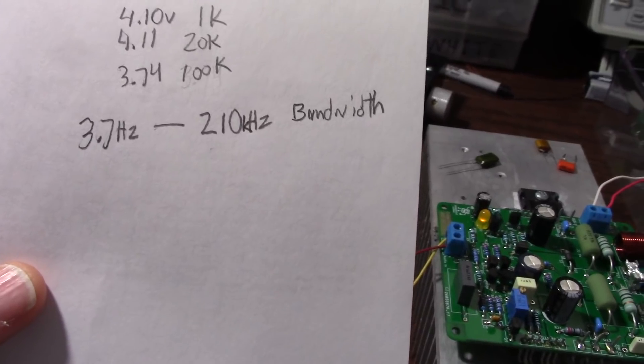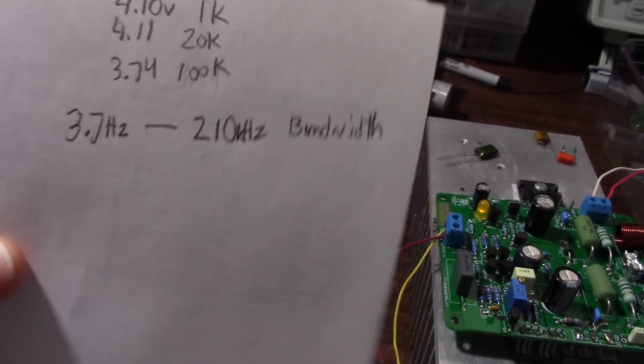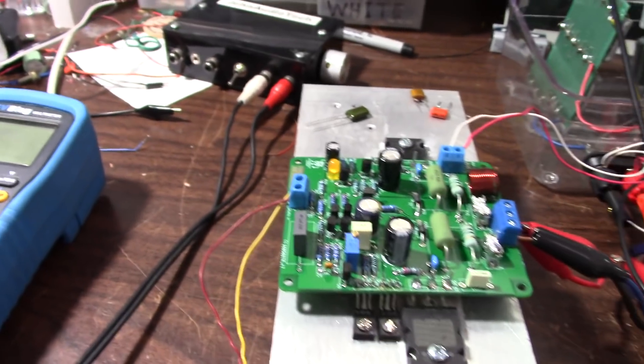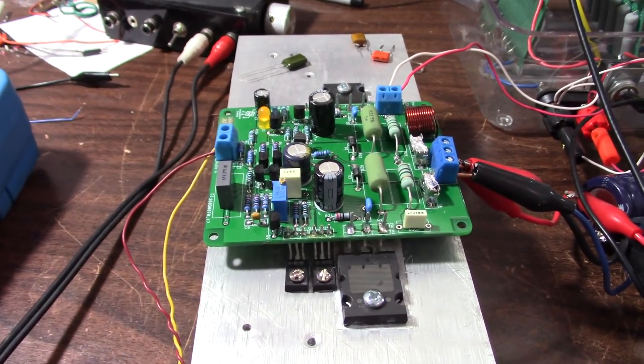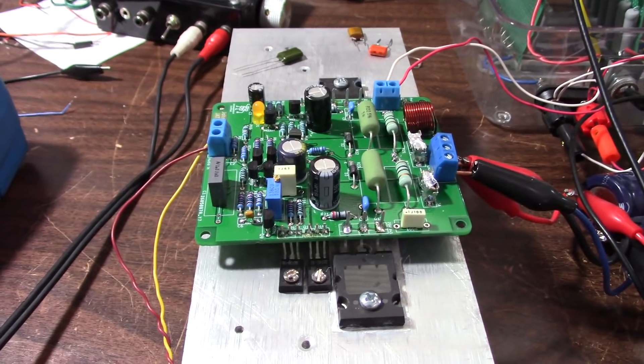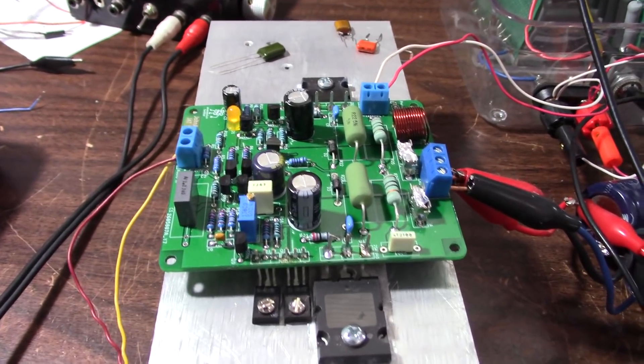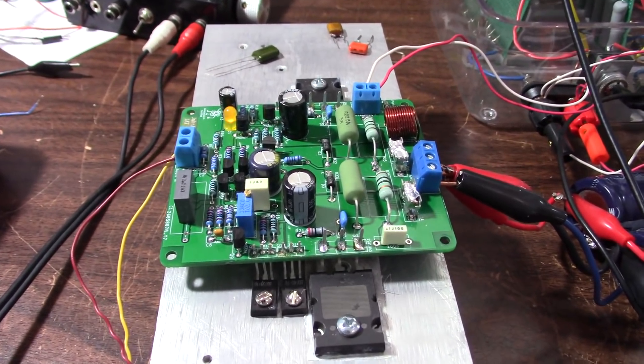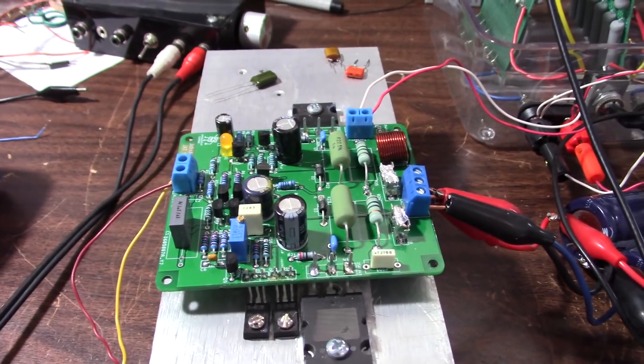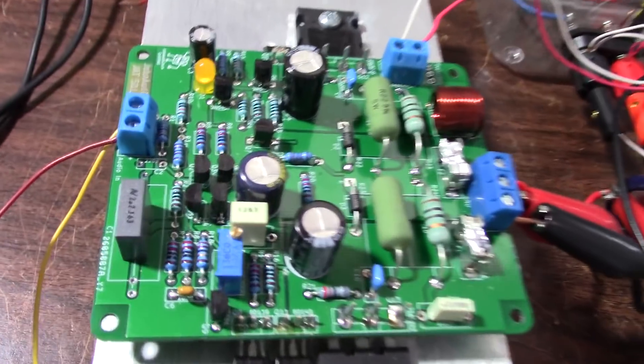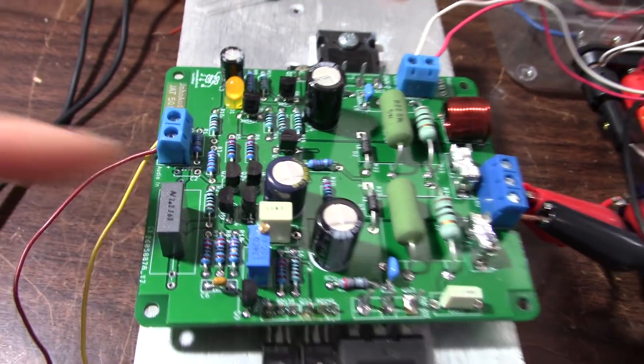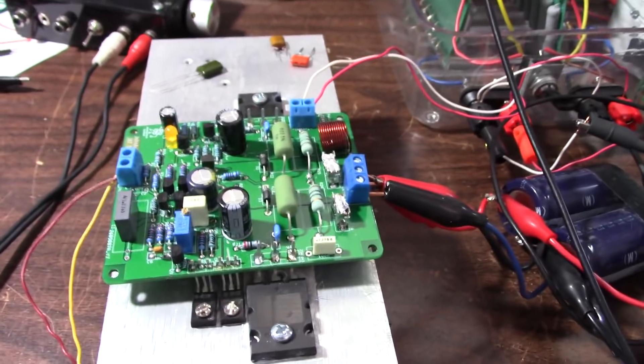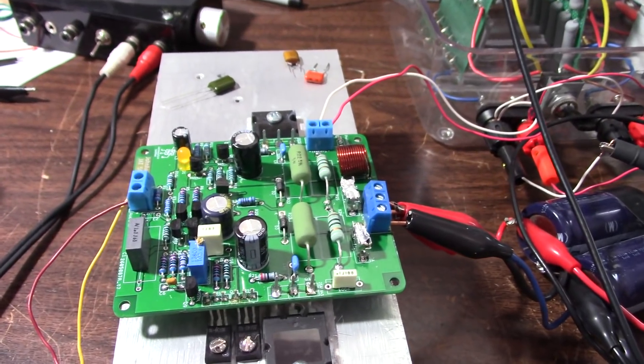I measured the bandwidth of the amplifier at 3.7 hertz out to 210 kilohertz. And why does an audio amplifier need that bandwidth? Well, I explained that before. It has to do with open loop gain and low distortion at high frequencies. And I'm not going to get into all that again. And I have the input low pass filter removed. And I never put it in there, so I can run all these tests.